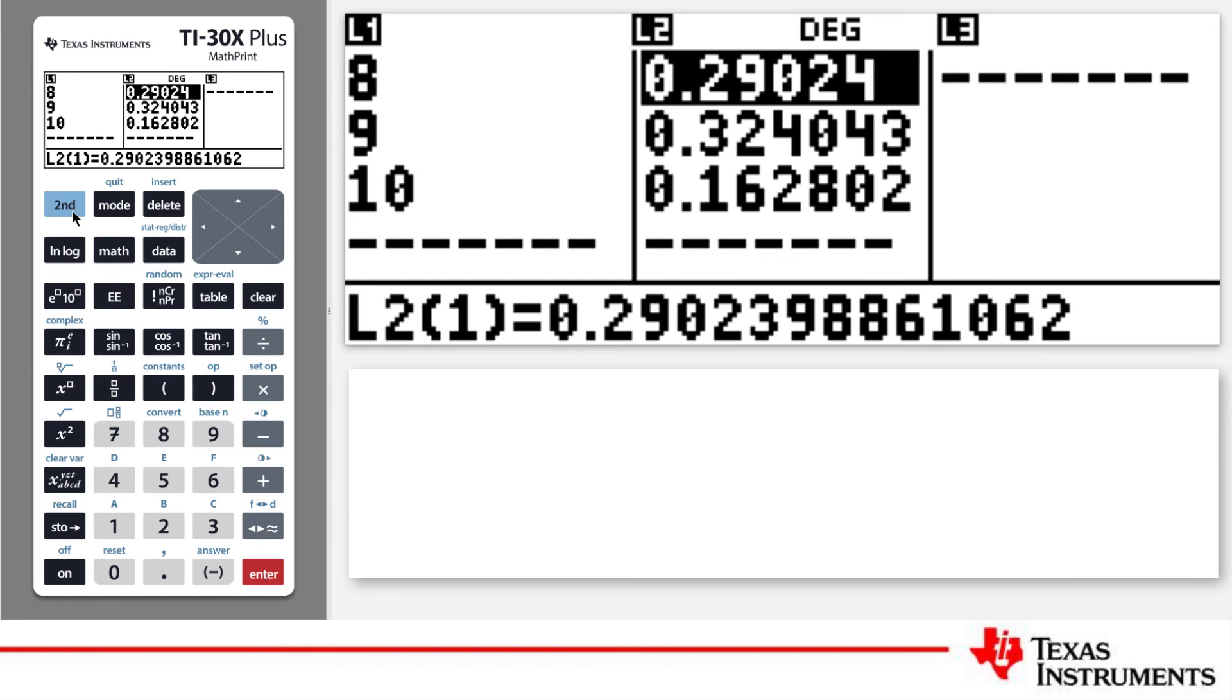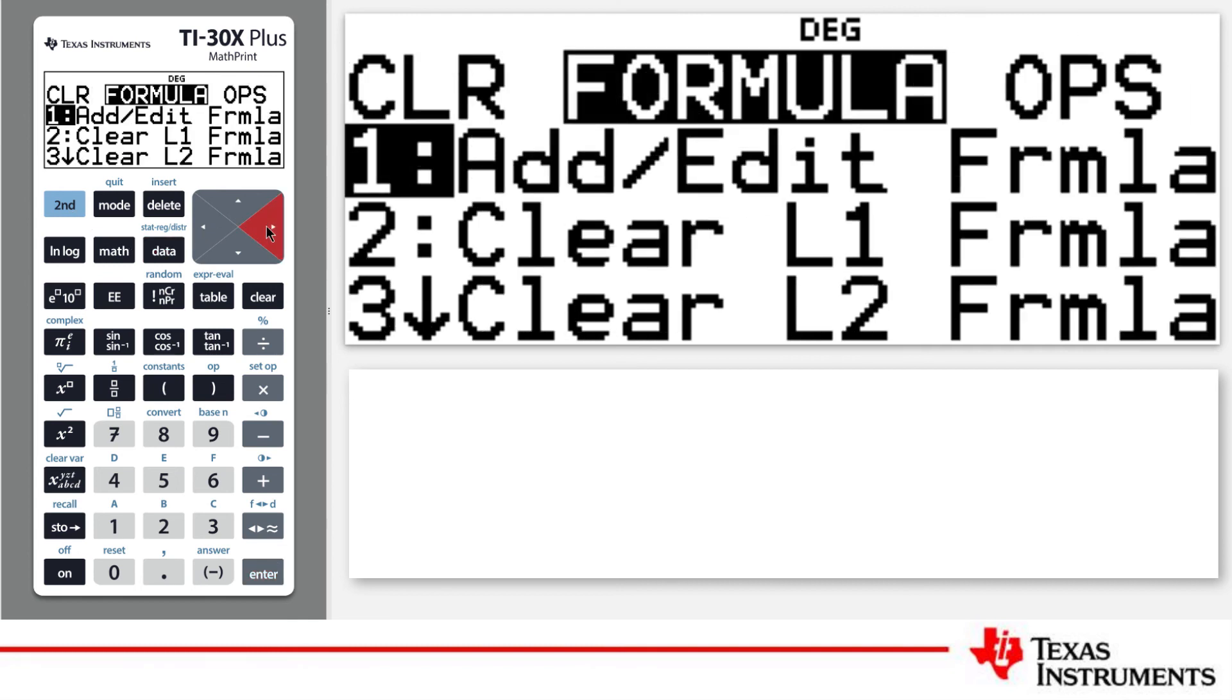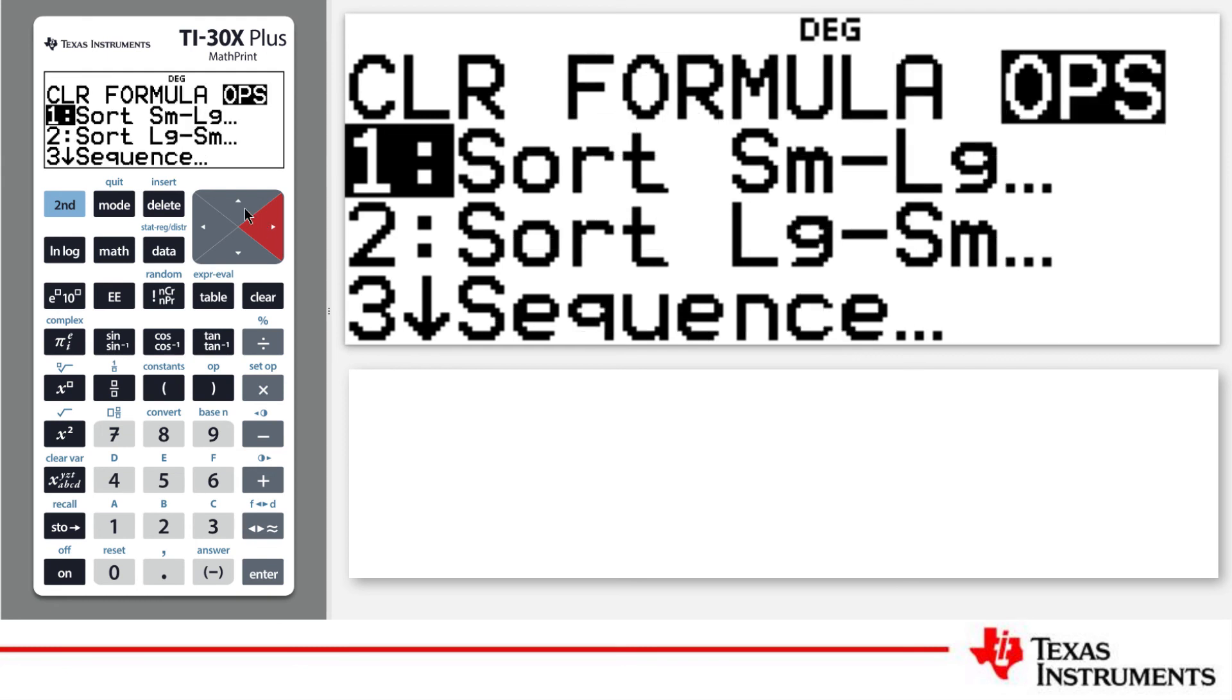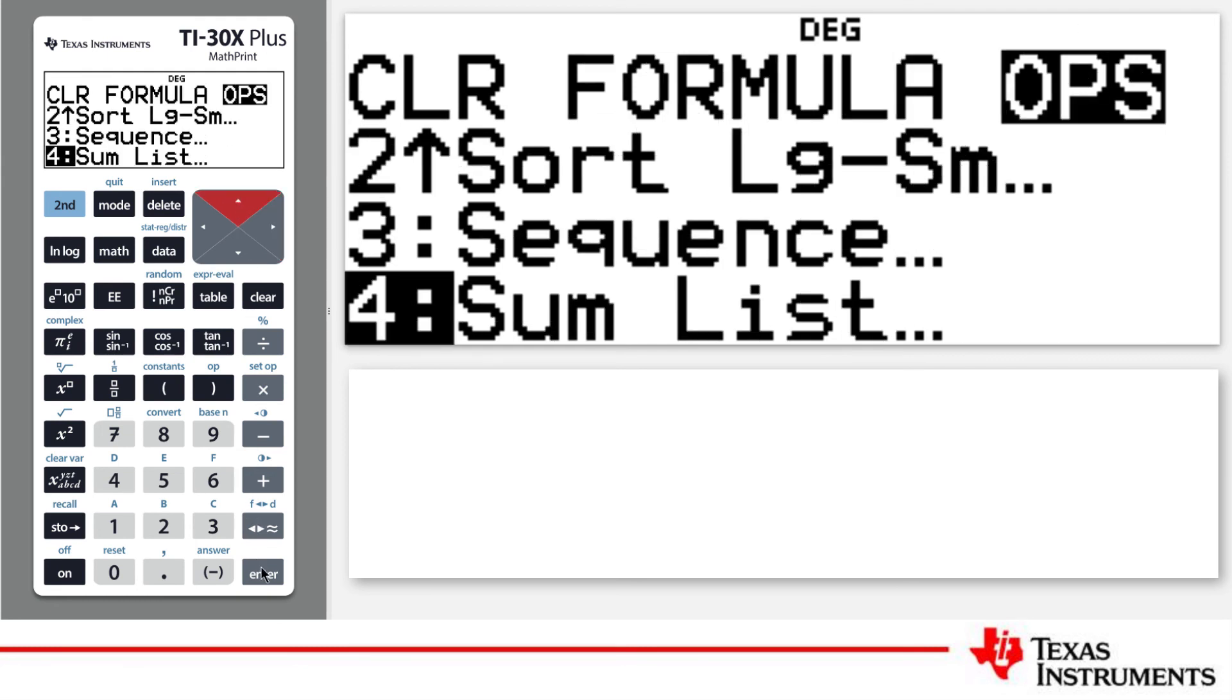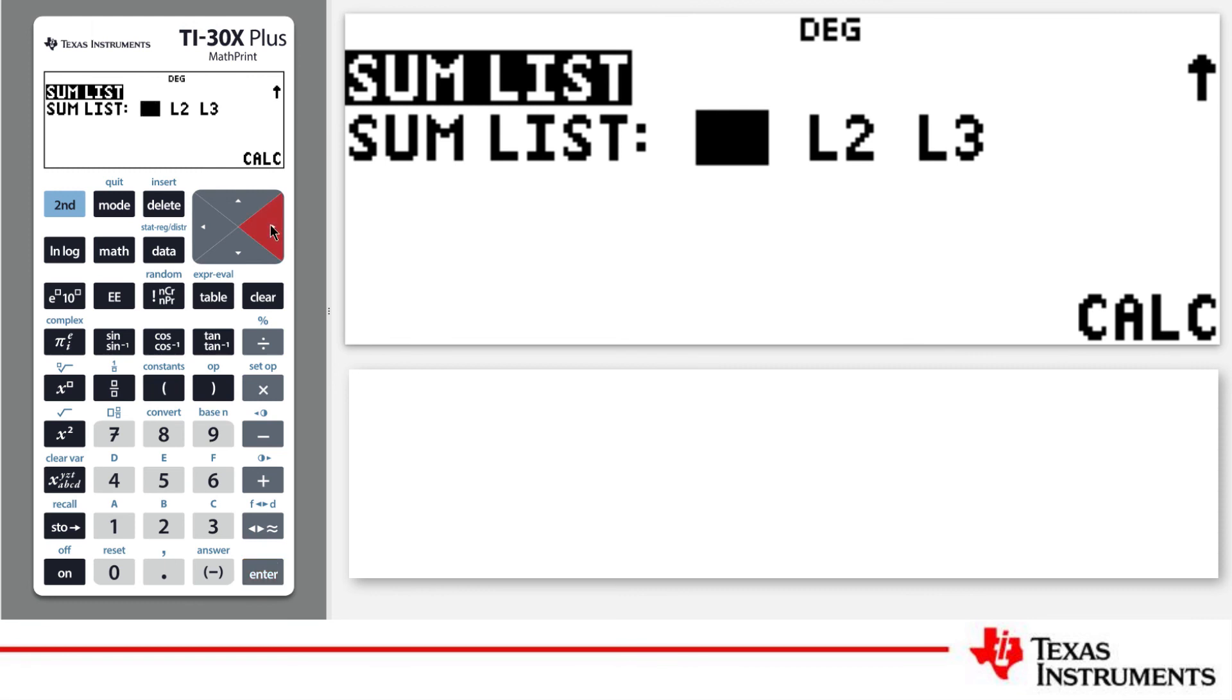Now, we have the likelihood of 8, 9 or 10 favourable results. We therefore need the sum of these. You could write these values down, or press the Data key, navigate to Operations, and select Sum List 2.